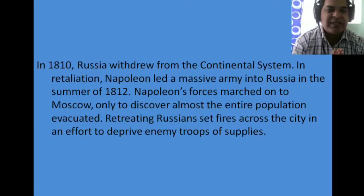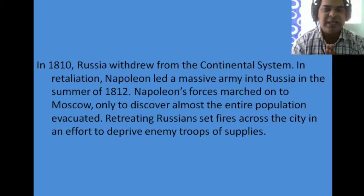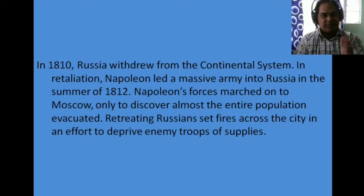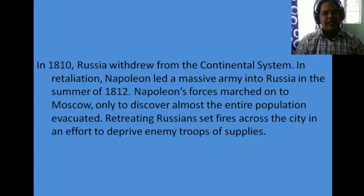As the Russian army retreated, they set fires across the city in an effort to deprive enemy troops of any supplies. They were moving back into their own territory while deliberately burning the city to cut off Napoleon's supply lines.